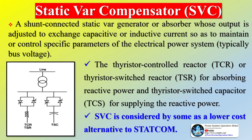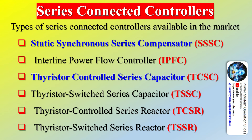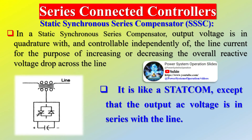Basic types of FACTS controllers are: series controllers, shunt controllers, combined series-series controllers, and combined series-shunt controllers. Series controllers could be a variable impedance — capacitor, reactor, etc. — or a power electronic-based variable source of main frequency, subsynchronous and harmonic frequencies. They inject voltage in series with the line. If the voltage is in phase quadrature with the current, the controller supplies or consumes reactive power; any other phase involves control of both active and reactive power.